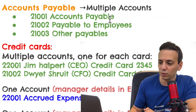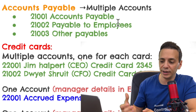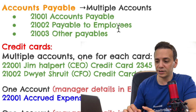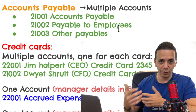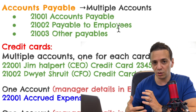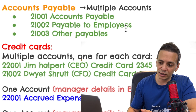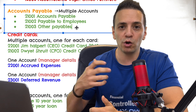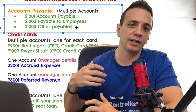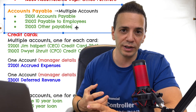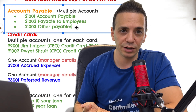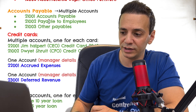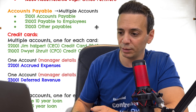Moving to the liability section — for accounts payable I like to create multiple accounts. First, a trade accounts payable for payables to vendors in the normal operations of the business. Second, a payables-to-employees account for reimbursements owed to employees at month end — travel, entertainment, meeting customers. Third, an other payable account for items not core to operations, such as a garnishment or tax collected from an employee that you owe to a government body.